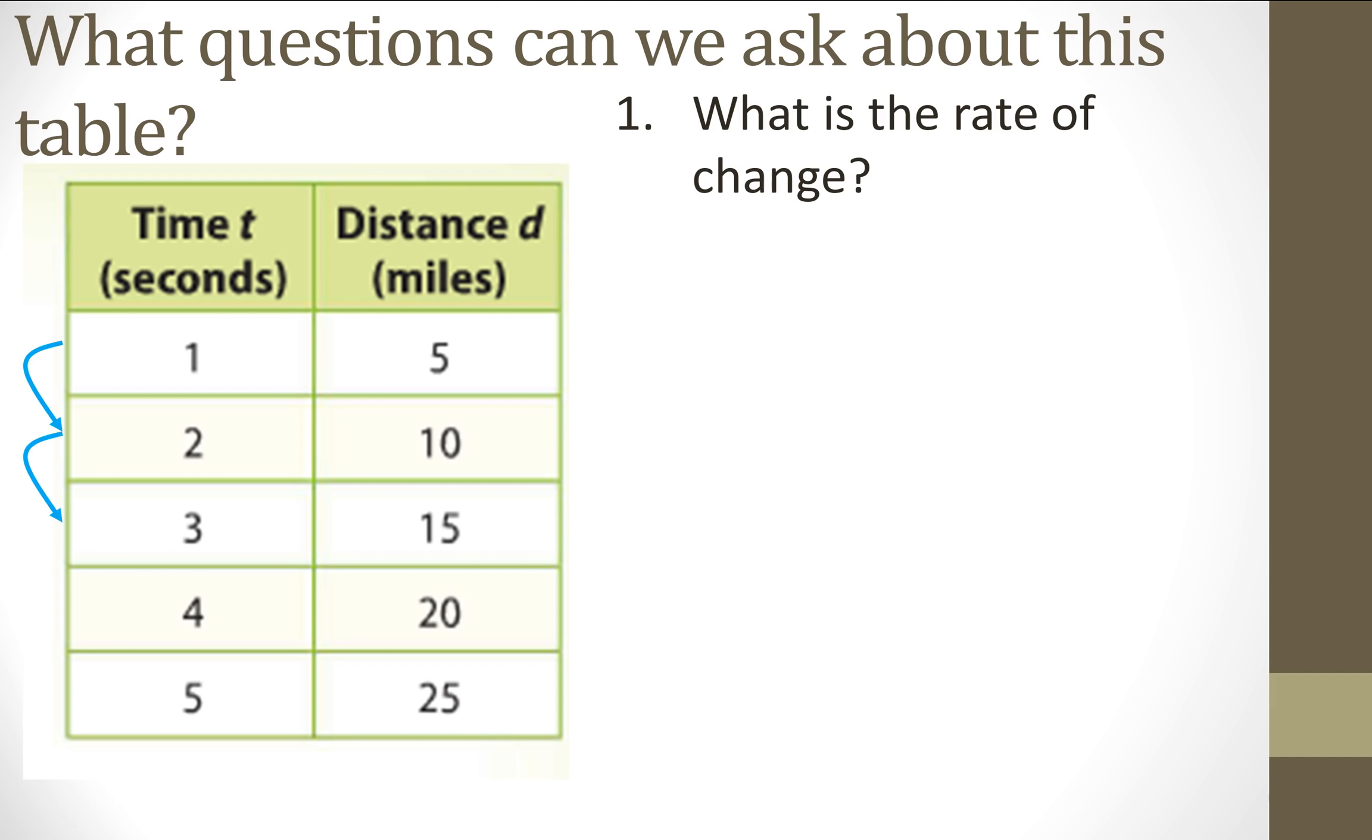So I'm going to take a look at the time column, the X column, the left column, and I'm going to see how much each of these numbers increases by, and they increase by one. So since they increase by one, then the rate of change or the change in X is one. So that's the change in X.